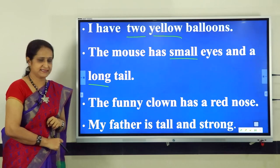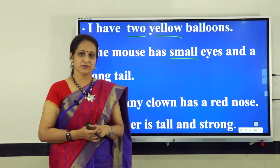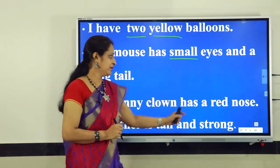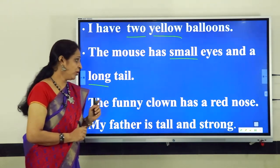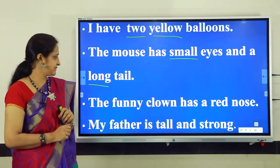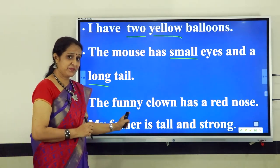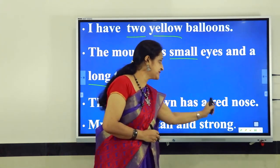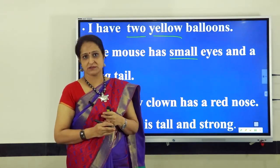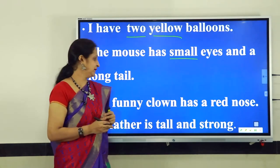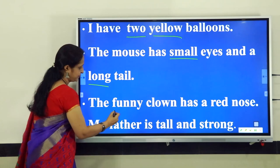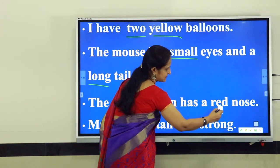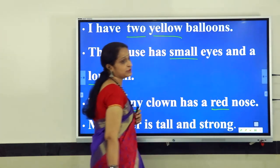Let's go to the next sentence: The funny clown has a red nose. Here in this sentence we have two nouns: clown and nose. We also have two describing words. We have the describing word funny that talks more about the noun clown, and we have the describing word red that speaks more about the noun nose. Let us underline these two describing words — funny that describes the clown, and red that says more about the nose of the clown.